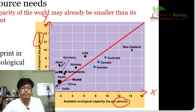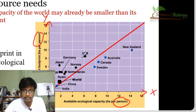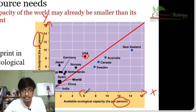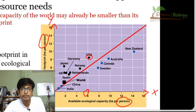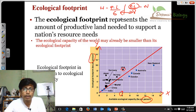Let's see what it means. For the USA, the ecological footprint required is something around 8, while the available ecological capacity is 6. So the ecological capacity present is 6, but the required footprint is 8. That means it already exceeds the amount of production that nature can support.